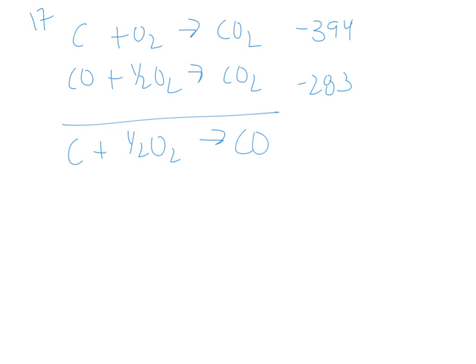In question 17, you're given two equations and asked to get the desired equation of carbon in the form of graphite plus half an O2 yields carbon monoxide. As I look at the two equations, I notice that in the first equation, I've got carbon on the reactant side in the amount I want it below. So I don't need to do anything to this first equation.